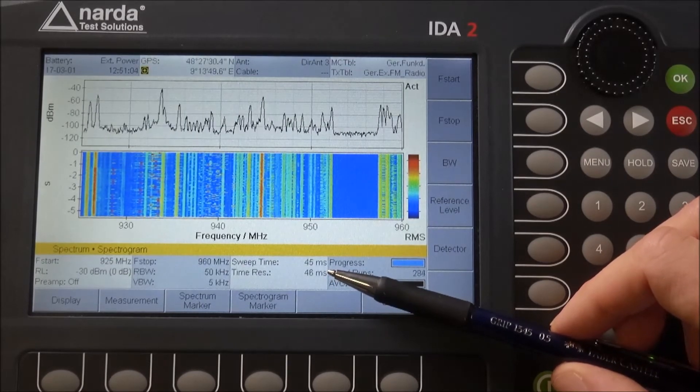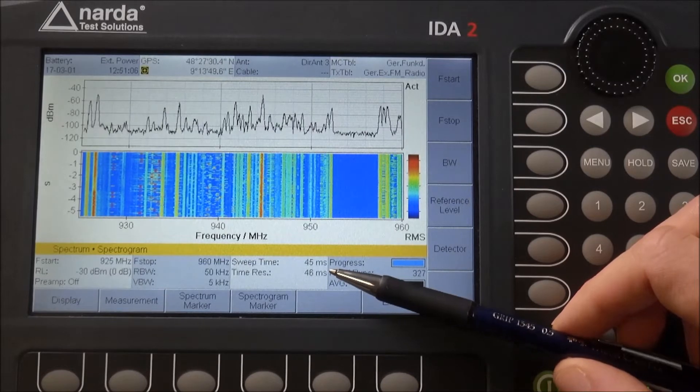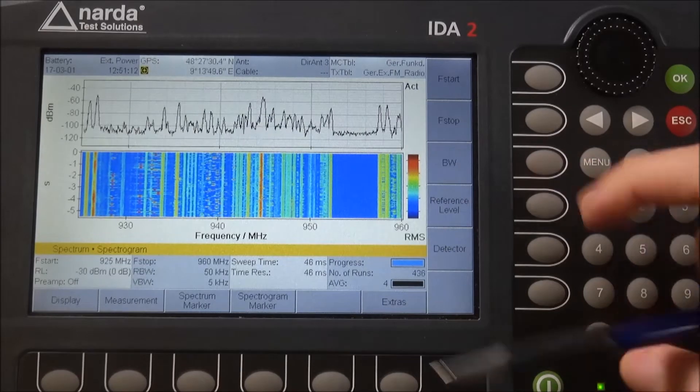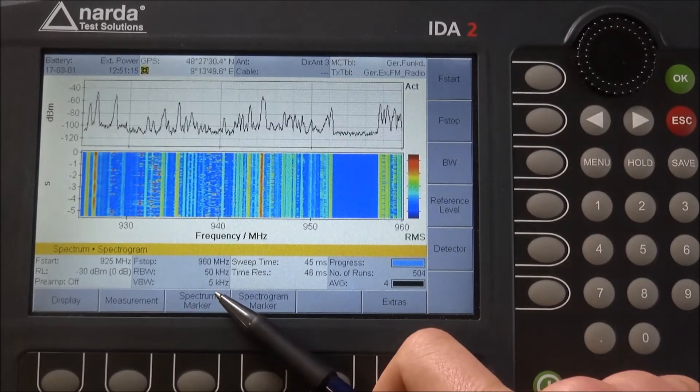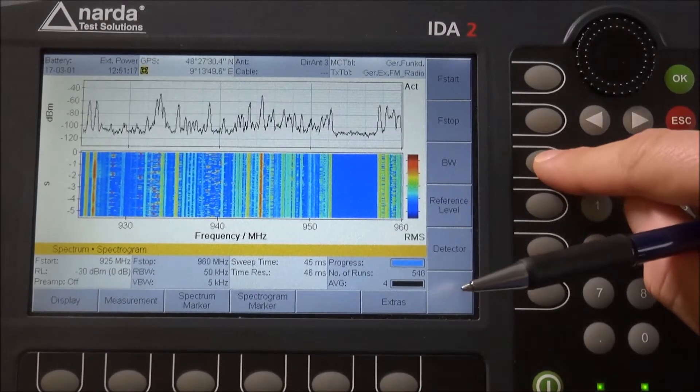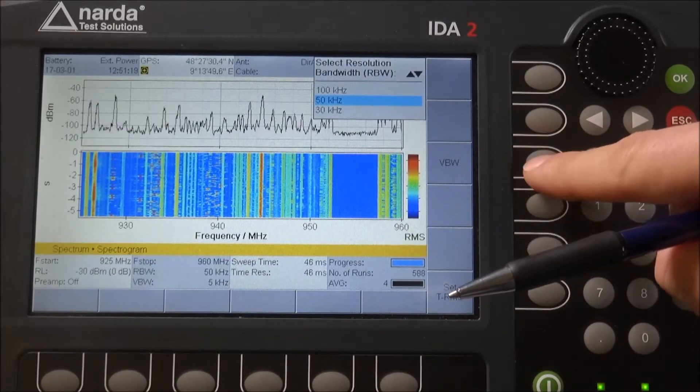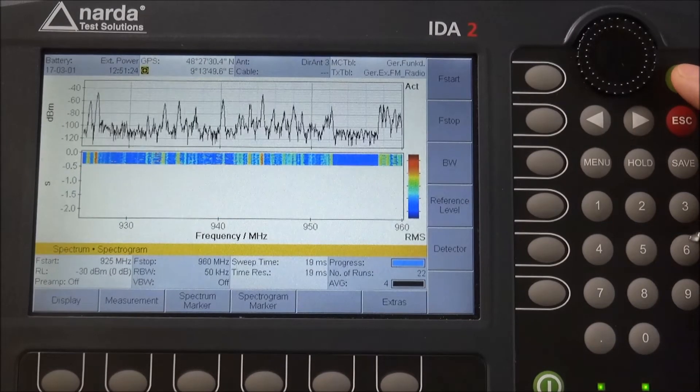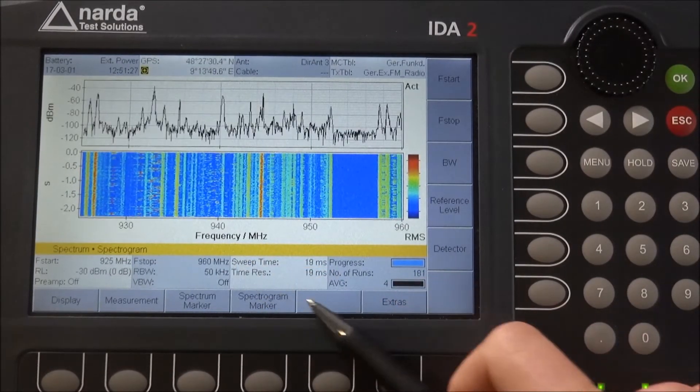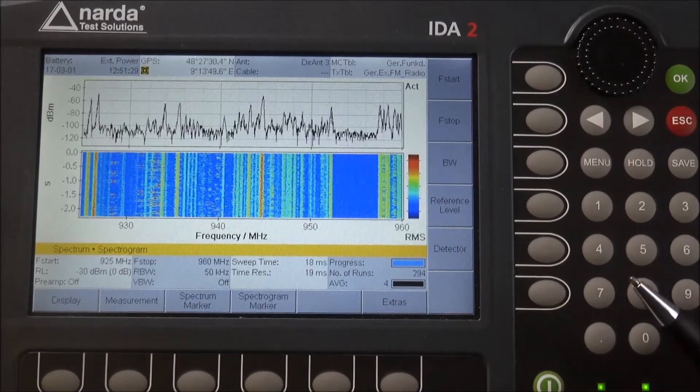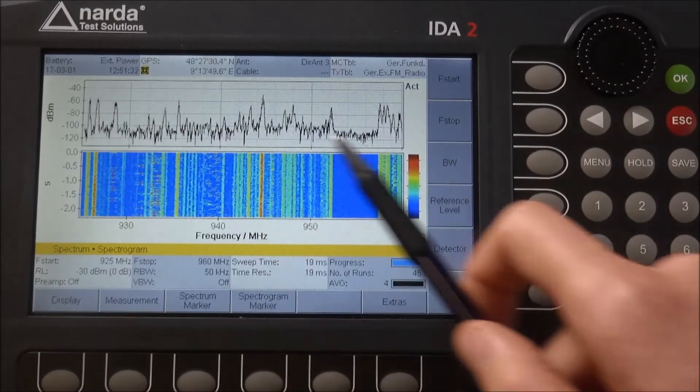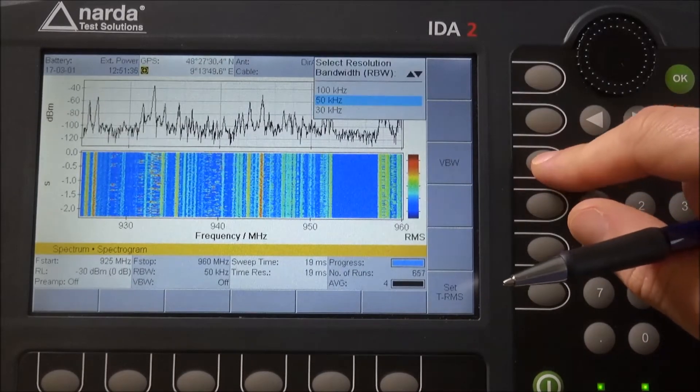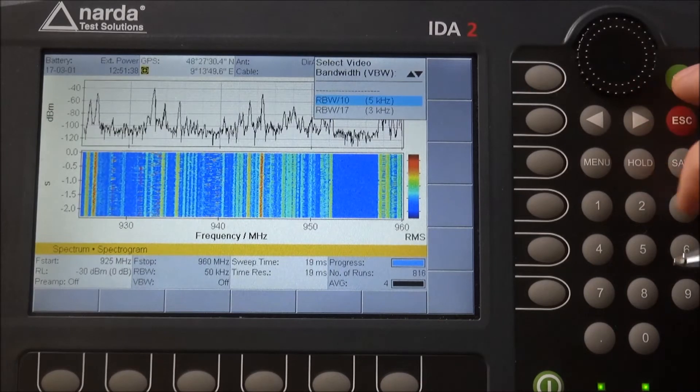To further decrease the sweep time and increase our signal detection chance, we can switch off the video filter, which is now at five kilohertz. Click on bandwidth, then VBW, and switch the filter off to improve sweep time even more. Now you can see the noise floor looks more noisy, so I typically like to use slight video filtering.